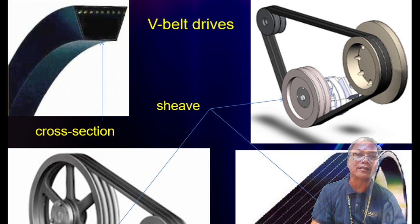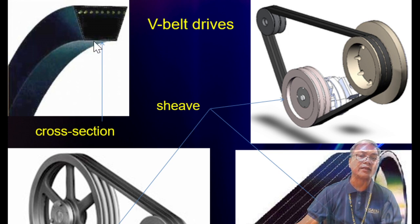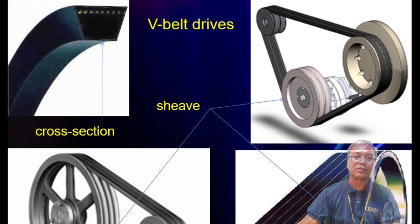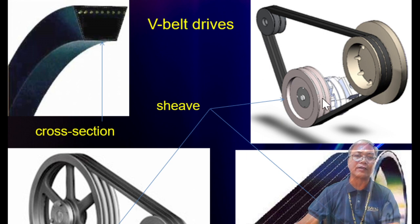V-belts are made of rubber with metal reinforcement inside to prevent excessive tension. The parts include the sheave and a tightener pulley, especially when the driver and driven pulleys are close together.